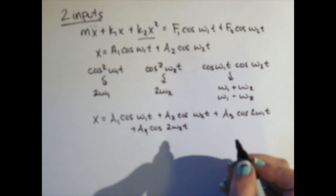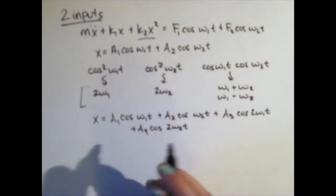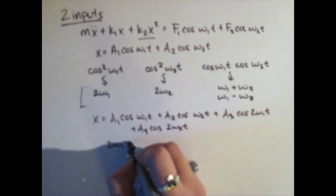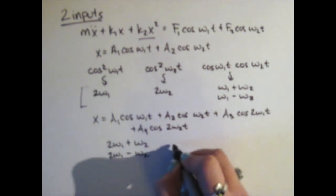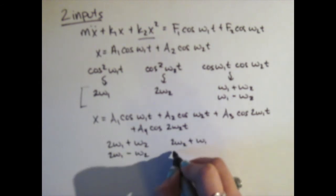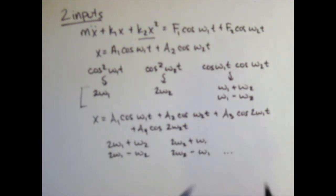In addition to these first set of harmonics, we get harmonics like these: 2 omega 1 plus omega 2, 2 omega 1 minus omega 2, 2 omega 2 plus omega 1, 2 omega 2 minus omega 1, and so on and so forth.